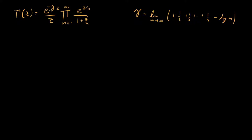What I want to do in this video is prove that this Weierstrass definition of the gamma function is equivalent to the Euler product definition of the gamma function. We know from the previous video that if those two are equivalent then this is also equivalent to the integral definition. So really I'm just showing that all three ways of writing the gamma function are the same — they're all different ways of writing the exact same function.